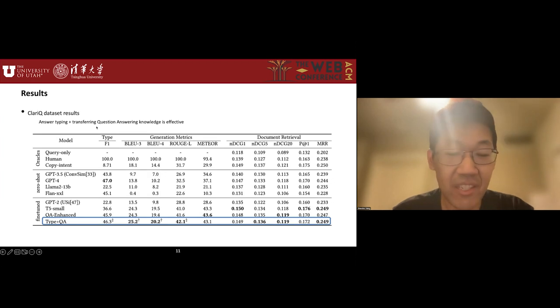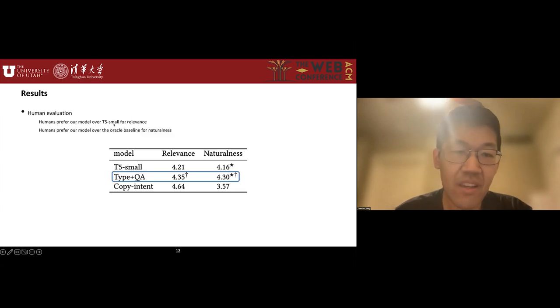The result on the CLERIC-Q dataset, which is our second dataset, gave a similar conclusion that our methods are indeed effective. Then we ask MTurk workers to give a score from 1 to 5 for each generated user response in terms of relevance and naturalness. Results show that humans also prefer our method over the T5-small baseline for generation relevance. Also, humans prefer our method over an intent copy and oracle for naturalness. This means that our method generates relevant responses while keeping a high resemblance to humans.